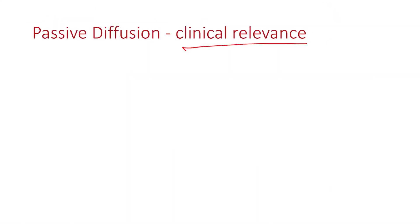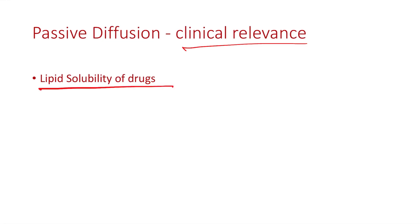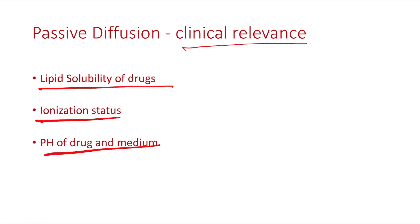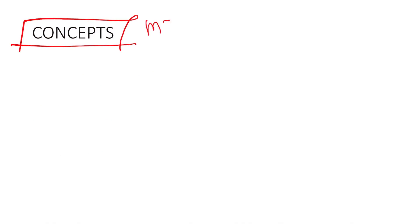Passive diffusion is clinically very relevant because pharmacology is ultimately about clinical application. Passive diffusion clinically depends on three things: lipid solubility of drugs — how lipid-soluble or water-soluble they are; the ionization status of a drug; and the pH of the drug as well as the medium. These are some of the most important basic concepts in pharmacology theory as well as viva examinations.